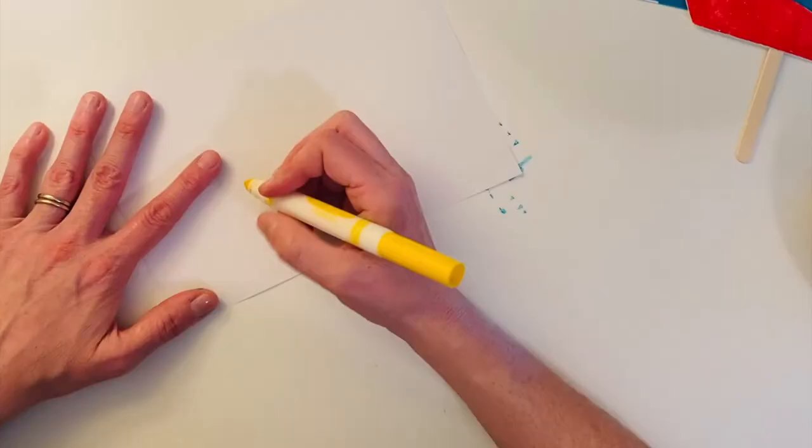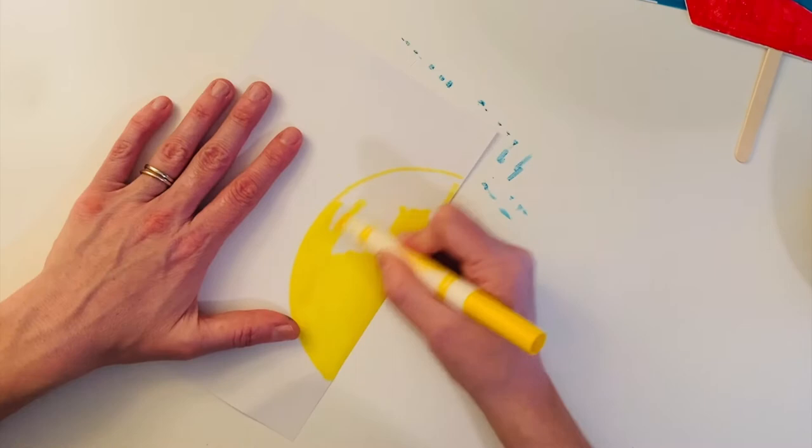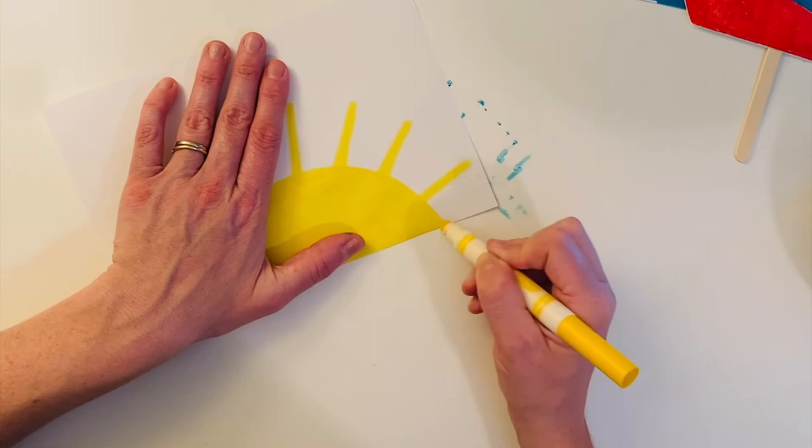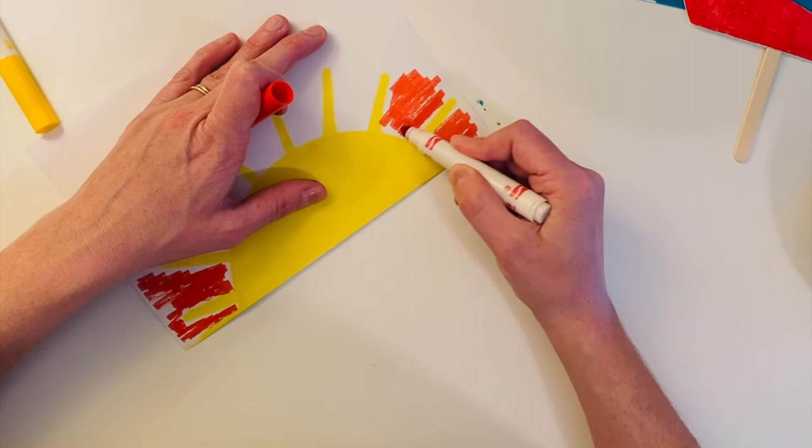Next, you can take your two pieces of six by nine inch construction paper and create backgrounds for your boats. So you could do a sky with clouds, or a sunset, or perhaps a stormy sky, anything you'd like to create a backdrop for your boats.